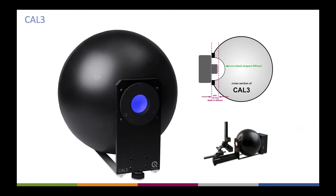What you can do for production lines is use the Cal 3. The Cal 3 is a light source based on IQLED technology with a bowl-shaped diffuser. You bring your device under test actually into the diffuser, so the device sees diffuse white from all angles. This enables flat field calibration of a fisheye lens or fisheye camera on the production line, and many customers in automotive environments use these devices to test and calibrate their cameras.